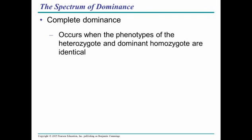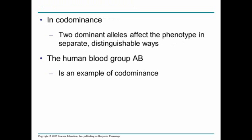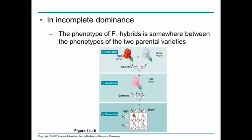One example is complete dominance, which is the normal scenario — where one allele is totally dominant over another. In co-dominance, two alleles both affect the phenotype at the same time, where both are dominant, such as in blood groups where blood type A and B are co-dominant with one another.